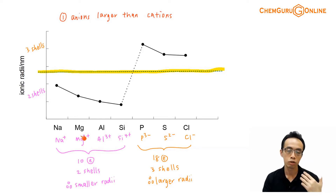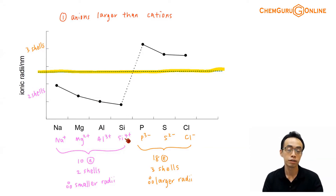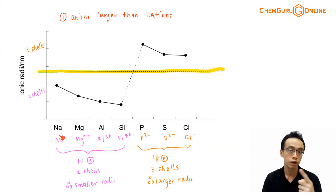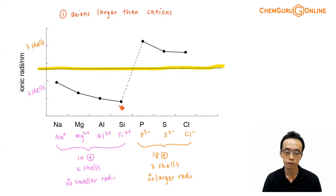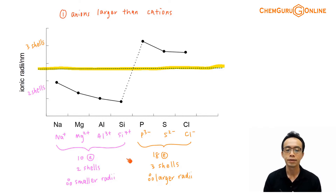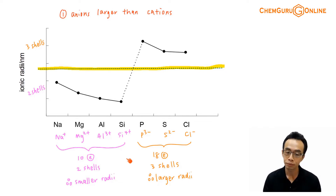Sodium forms Na+, magnesium Mg2+, aluminum Al3+, and silicon Si4+, depending on the number of valence electrons they lose. All these cations have 10 electrons, meaning only 2 principal quantum shells are filled.